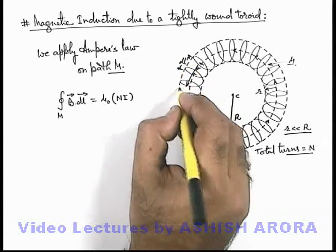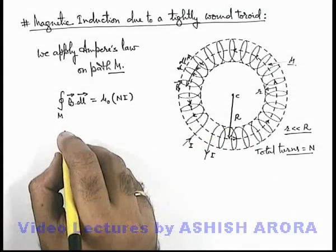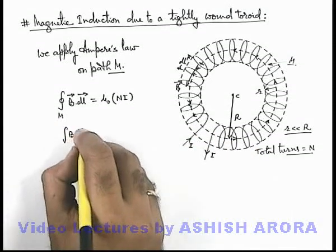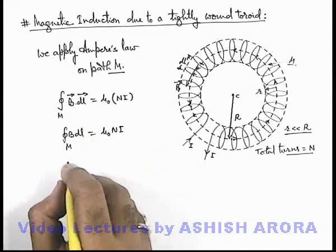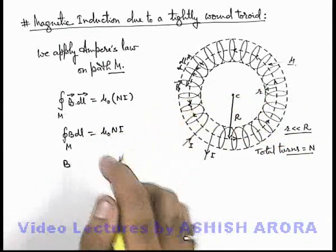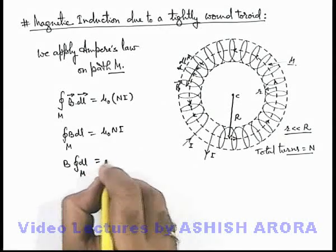And magnetic induction is also tangential in this situation. This can be written as ∫Bdl for the closed path M equals μ₀NI. And this can be written as: since B is uniform by symmetry, ∫dl for the closed path M equals μ₀NI.